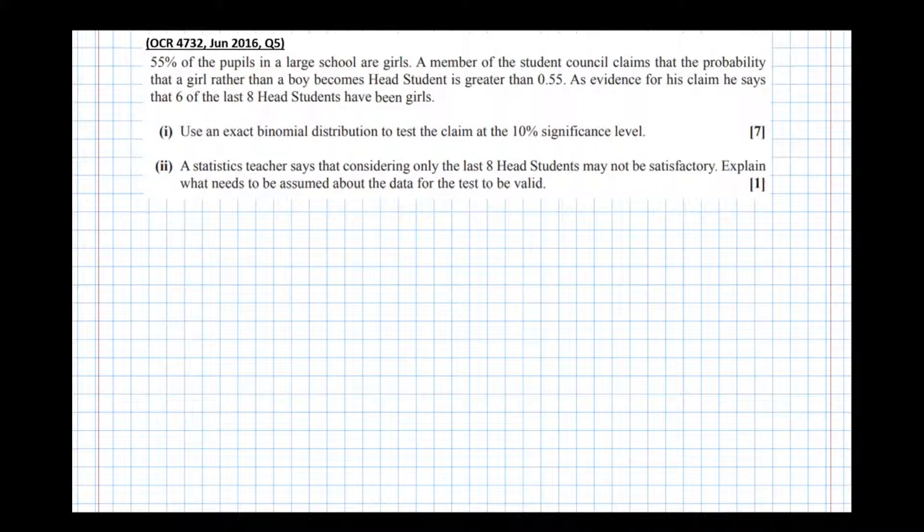Before we do anything however, let's have a look at the question and try and work out what it's actually asking us. So it says 55% of the pupils in a large school are girls. A member of the student council claims that the probability that a girl rather than a boy becomes head student is greater than 0.55. As evidence for his claims, he says that six out of the last eight head students have been girls. Use an exact binomial distribution to test the claim at the 10% significance level.